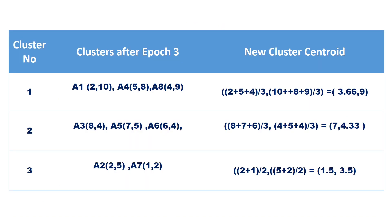Recompute the cluster centroids as before. C1 is (3.66, 9), C2 is (7, 4.33), and C3 is (1.5, 3.5). Perform the next iteration.